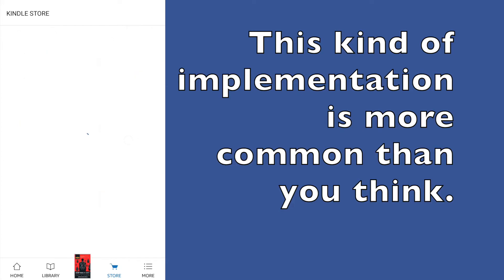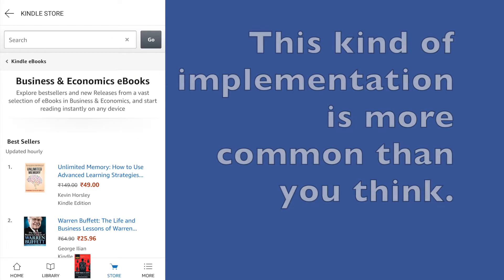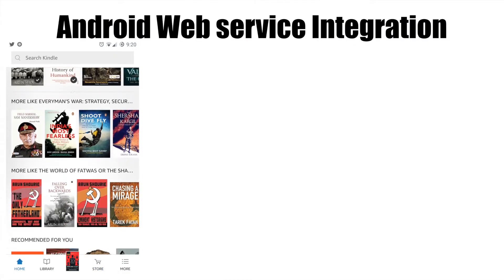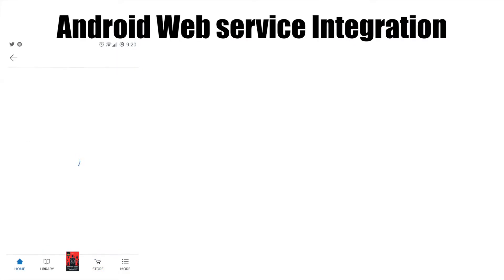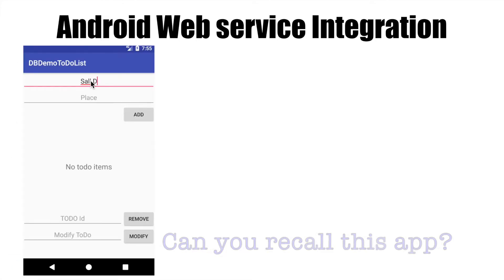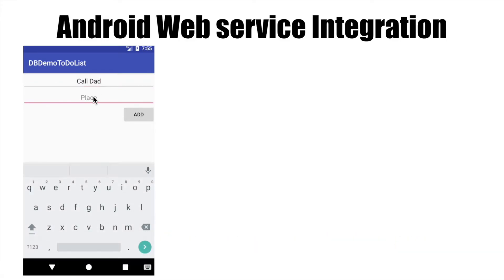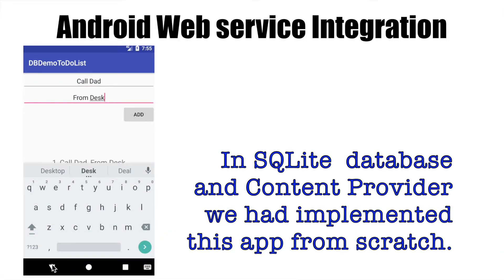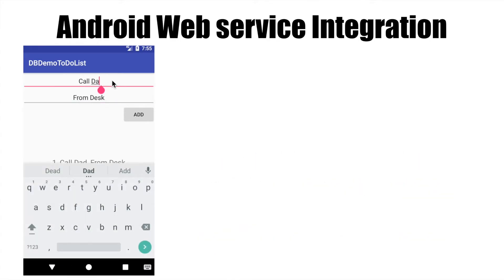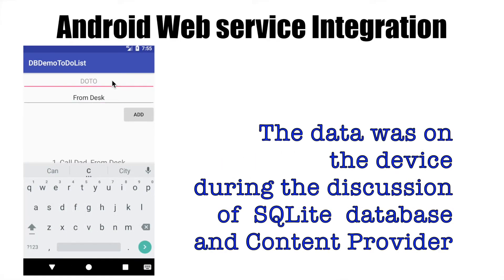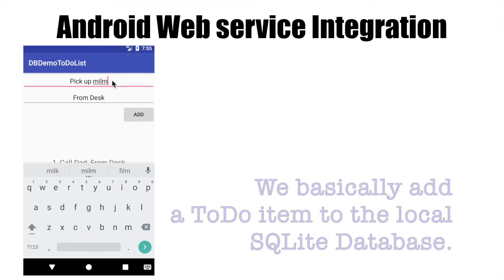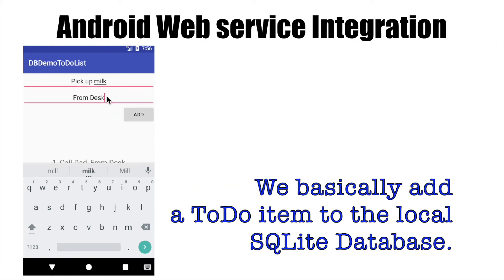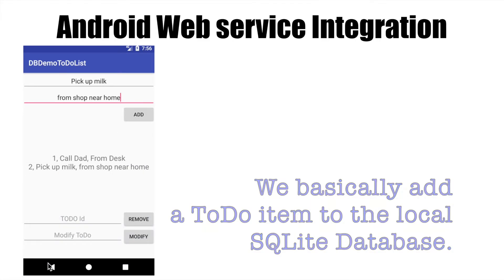This is how a typical web service looks like in real action. But to understand and learn web service integration, we cannot use a very complicated app. So what we will do is revisit one of the earlier apps we had developed in the earlier series. If you recall in the discussion of SQLite databases and the content provider, we had created a SQLite database for an app — a to-do list app where you could enter a to-do item and the place where you want to do that task, and add it to a SQLite database.